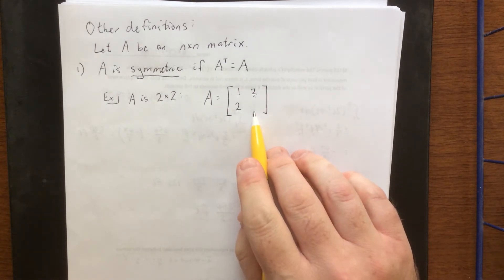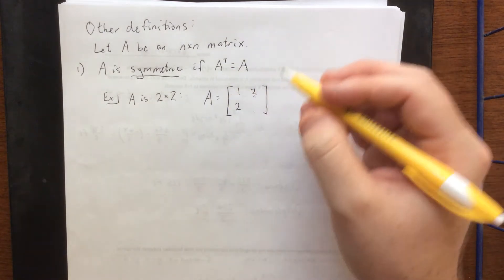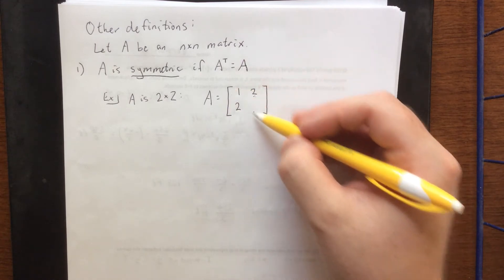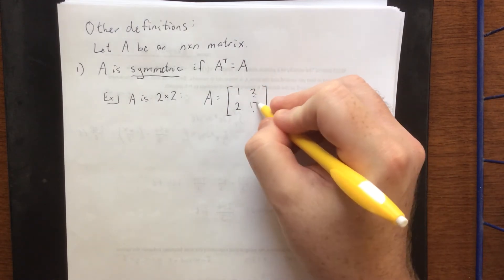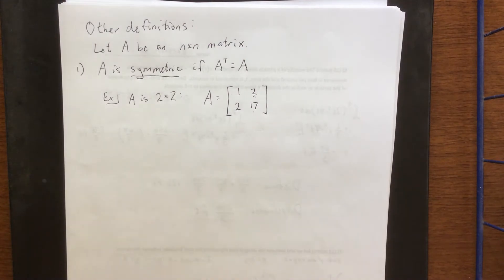The 2, 2 entry can be whatever we want it to be because when we take a transpose, the elements that are on the main diagonal don't actually change. So 1, 2, 2, 17 because it doesn't really matter.